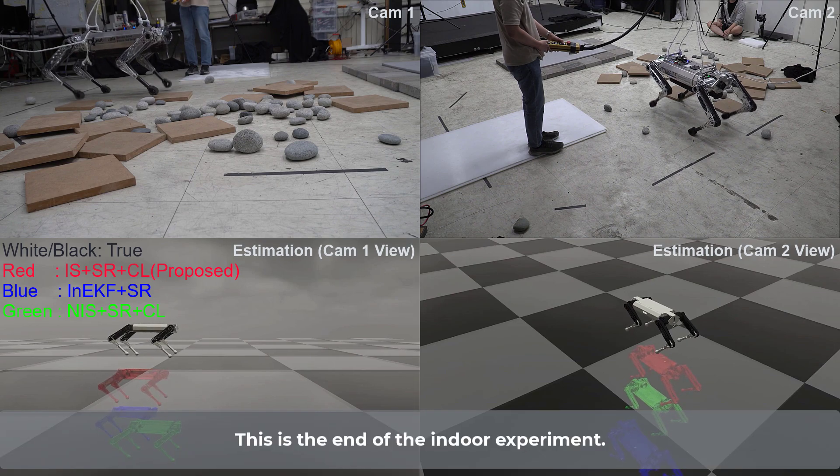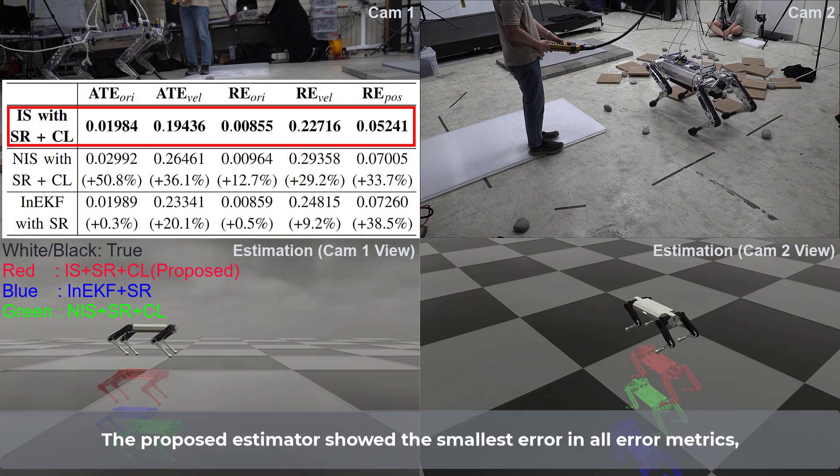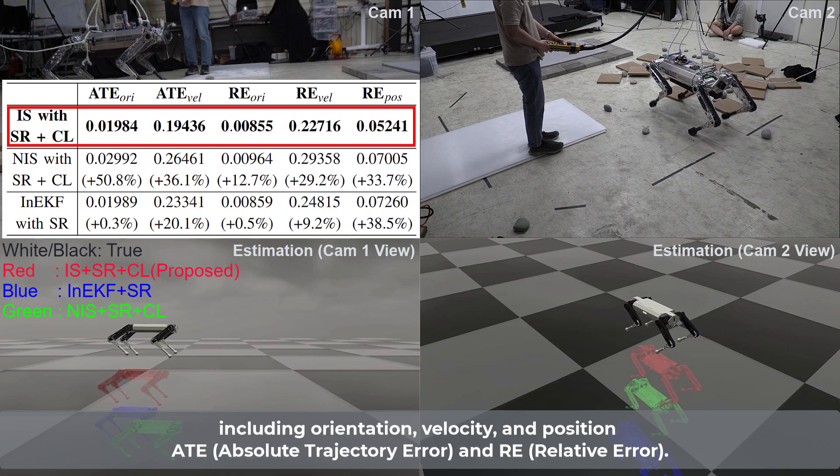The proposed estimator shows the smallest error in all error maps. This is the end of the indoor experiment. The proposed estimator showed the smallest error in all error metrics, including orientation, velocity, and position ATE and RE.